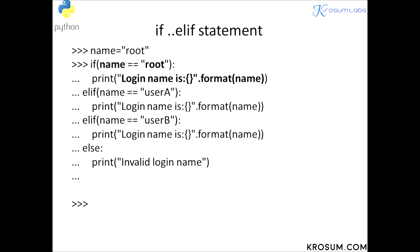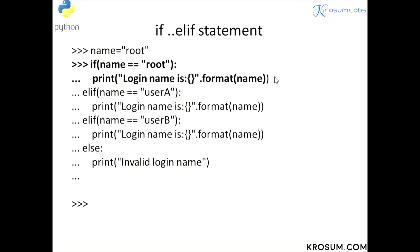Here is an example using if-elif. We initialize the variable name with value 'root'. The condition statement checks if name equals 'root' — this is a comparison returning a boolean. If the first condition is true, control executes the first block then exits the conditional code, without testing the remaining conditions. See the indentation: after finishing, the next prompt will appear.